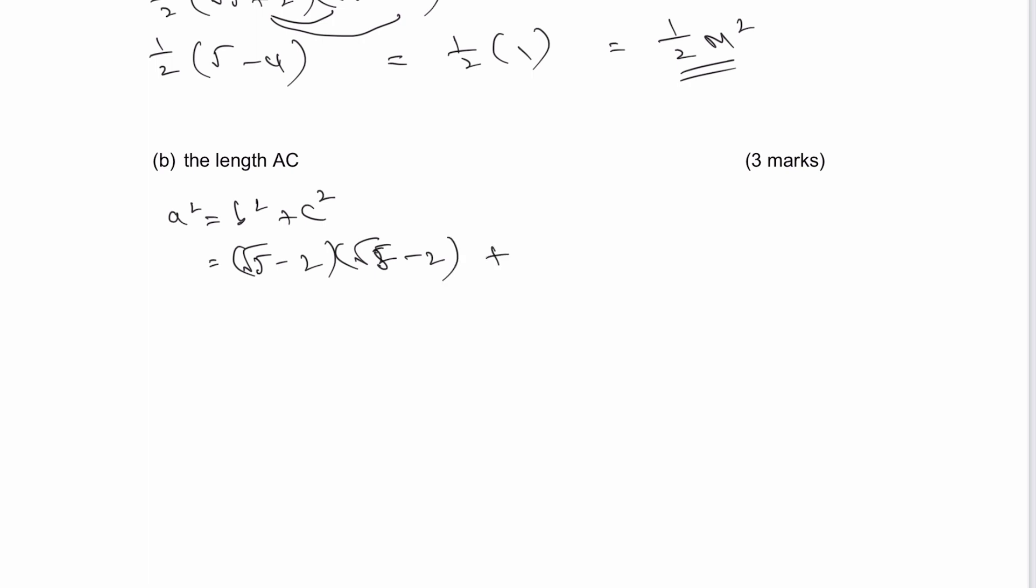And that's going to be equal to the square root of 5 plus 2 multiplied by the square root of 5 plus 2 because that's also then c squared. And it really is just a case of expanding that and then simplifying it.